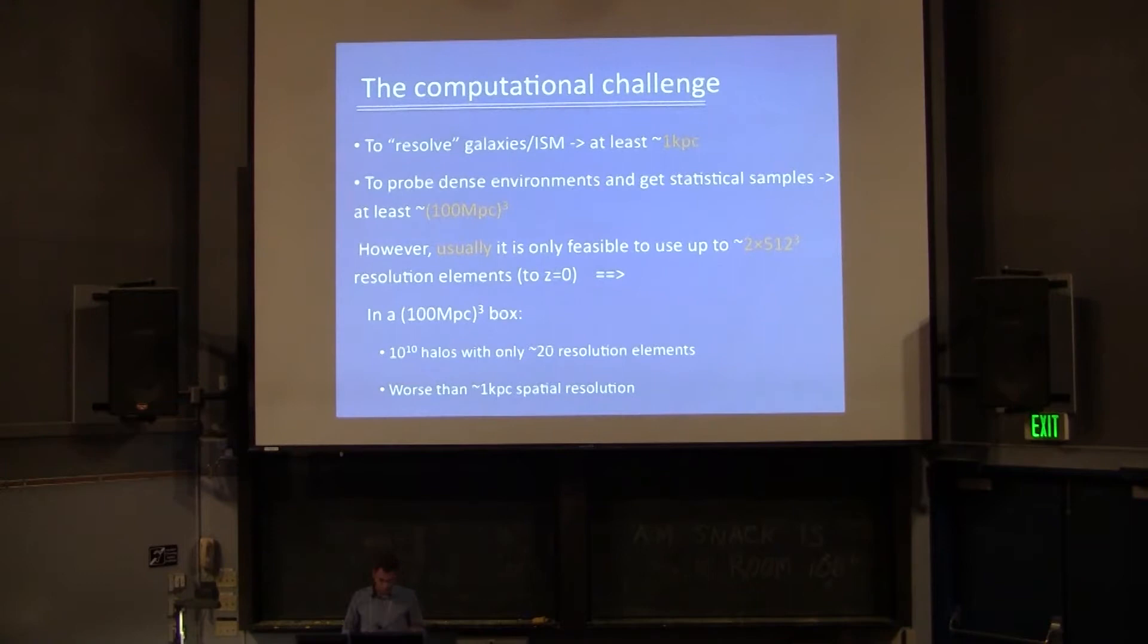The other problem we have is of course the computational challenge. So here I'm putting just very basic requirements to resolve galaxies. Let's say we need to resolve at least one kiloparsec. That's really not so good. But if you're doing worse than that, you're really not resolving a galaxy. At the same time, to get statistical samples of galaxies and to resolve various environments of the universe, you need to model at least on scales of 100 megaparsecs or so. Now, these two requirements combined, you can't really do with the standard number of resolution elements that people can run with current computers reasonably. So you need many more resolution elements than that, and that is computationally very expensive.